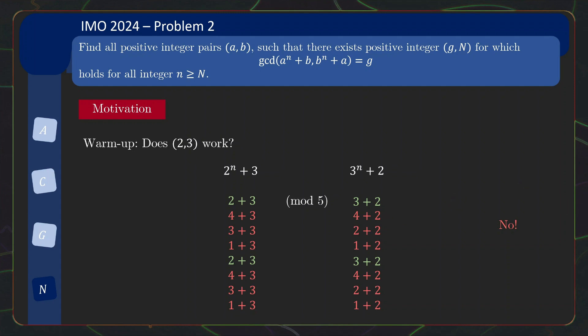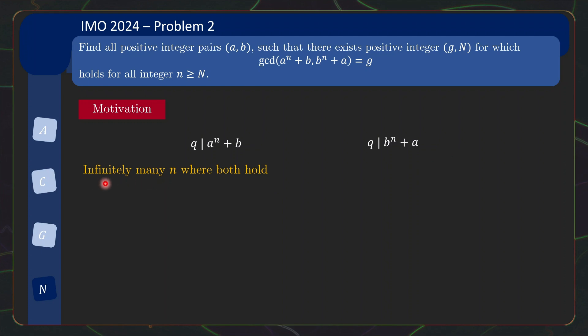So this motivates the following approach. You might want to look for some value of q such that these two divisibilities hold for infinitely many n, but there are also infinitely many n where at least one of these divisibilities fails. And this together will tell us that q divides the gcd infinitely often, but there are also other infinitely many terms where q does not divide the gcd. And so the gcd cannot be eventually constant.